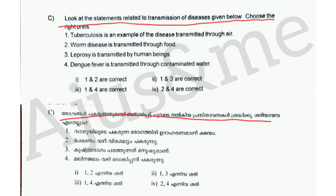First: Tuberculosis is an example of a disease transmitted through air. Air is an example of a disease transmitted through air — you have an example of tuberculosis. That is correct.